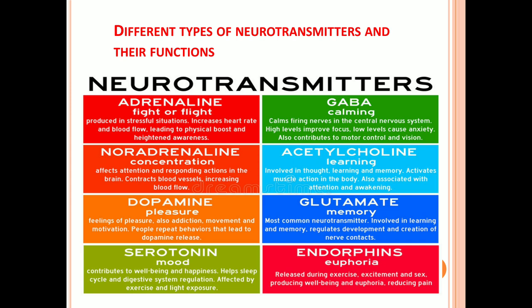Different neurotransmitters and their functions are listed on this slide: adrenaline for fight or flight, GABA for calming, acetylcholine for learning, glutamate for memory, endorphins for euphoria, serotonin for mood, and dopamine for pleasure. The slide also shows what happens if each neurotransmitter is released in excess or is deficient — you can pause the video to review this.